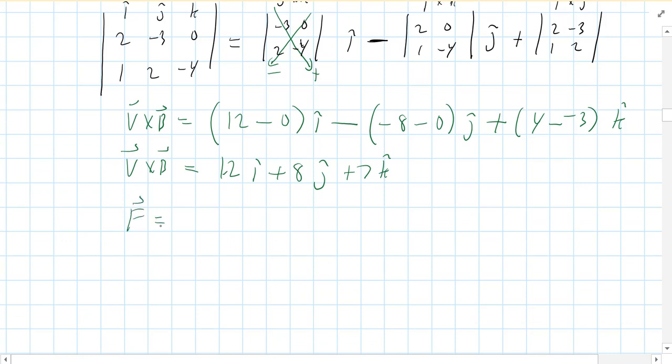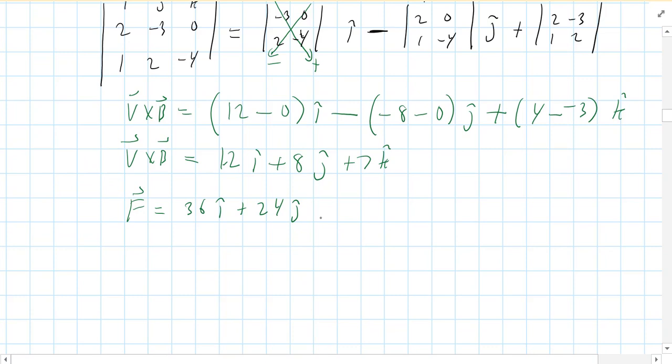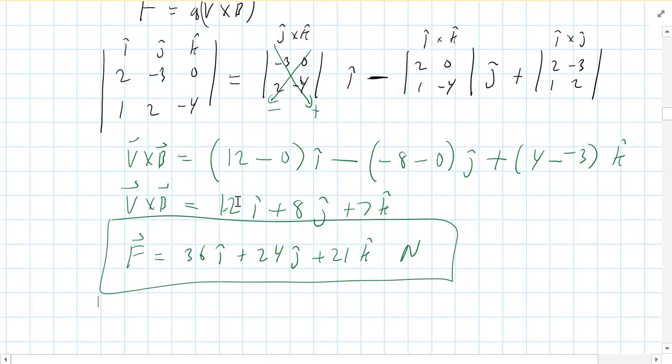And our force is Q times V cross B. So our force, if Q is 3, we just triple each of these things. And you get 36 i hat plus 24 j hat plus 21 k hat newtons. So that would be the force acting on that little charged particle running through that field.